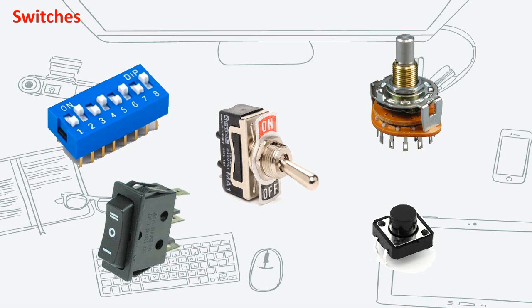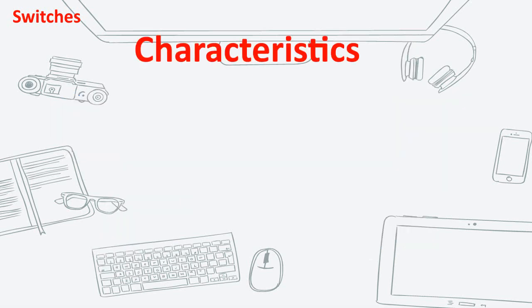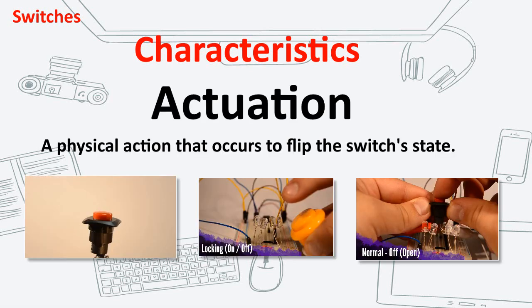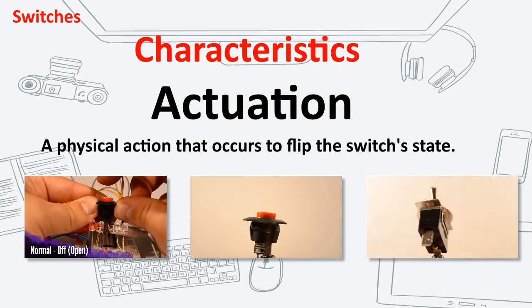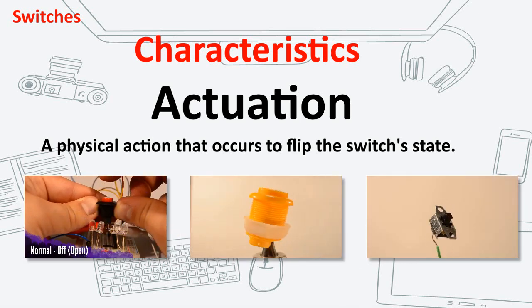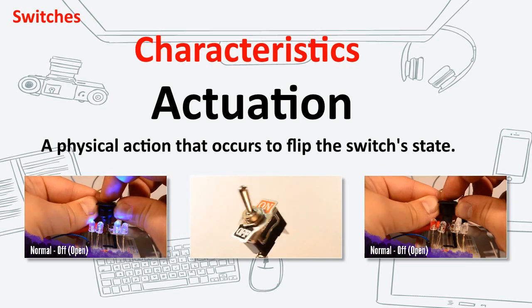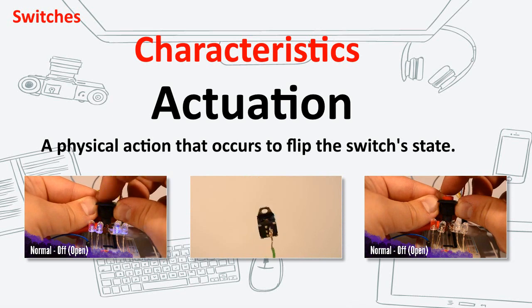Characteristics like the action that would cause it to flip the switch, or the number of circuits that the switch can control. The following are some of the basic switch characteristics. Actuation: a physical action that occurs to flip the switch's state. This is one of the more defining characteristics of a switch.